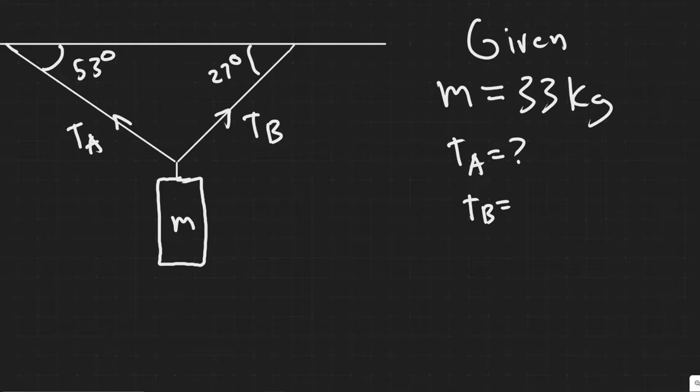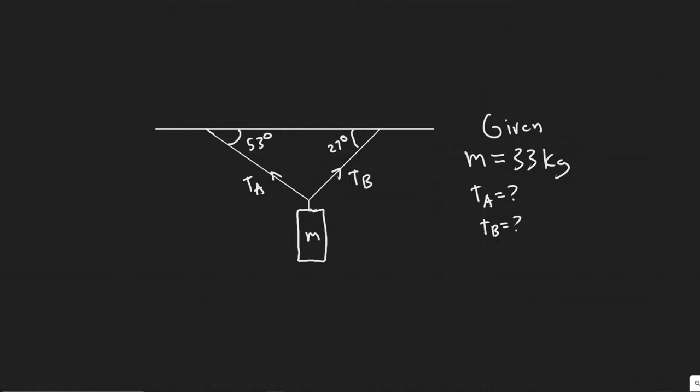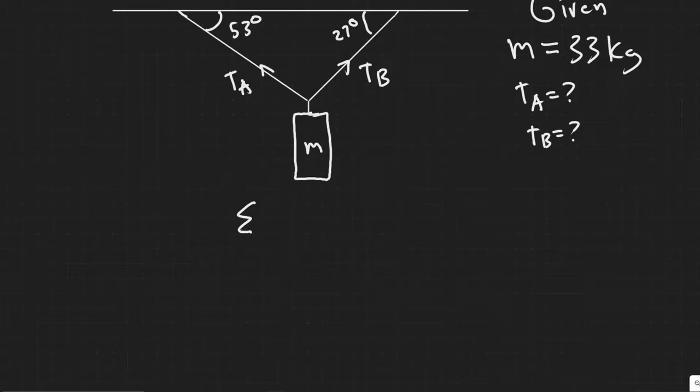How are we going to solve this problem? Basically what we're going to be doing is summing the forces in each direction, and then we're going to be able to substitute one of the equations in order to solve for one variable. So that's basically it.